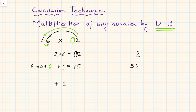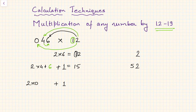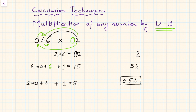Now after 4 there is no number, but we can assume there is a 0. So take 2 and multiply by 0, then add the adjacent number to 0, which is 4: so 2 into 0 plus 4 = 4, plus carry 1 = 5. This 5 is written adjacent to the previous '52', so the answer is 552.